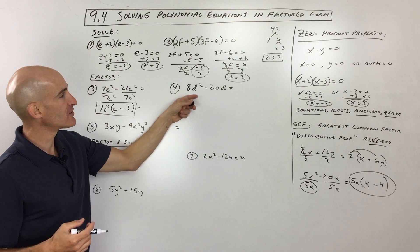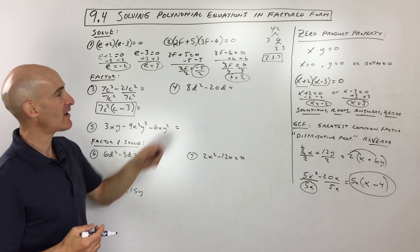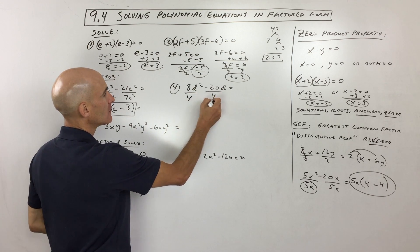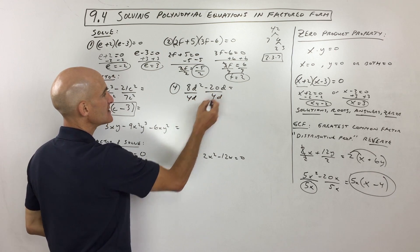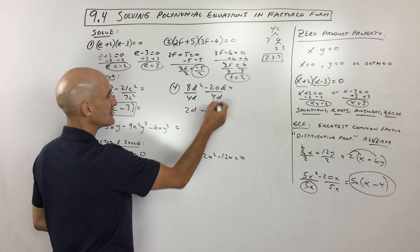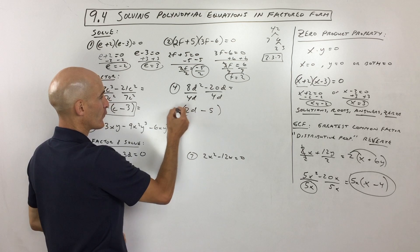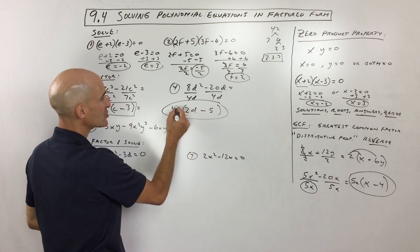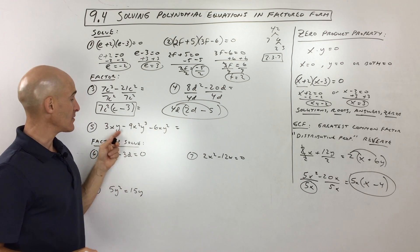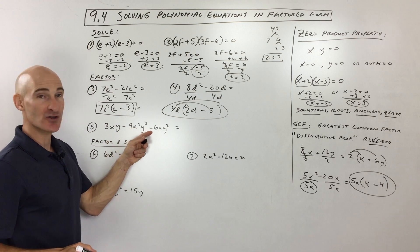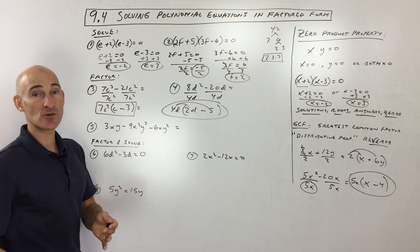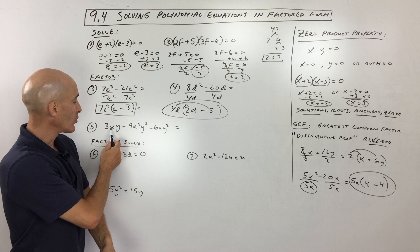Try number 4: 8d squared minus 20d. What can we divide out? Looks like 4, and both terms have at least one d. Dividing by 4d: 8 divided by 4 gives 2, and 2 minus 1 gives d. Over here, 20 divided by 4 is 5, and the d's cancel. So we're factoring out 4d, putting it in front: 4d times (2d minus 5). You can check by distributing to get back to the original.